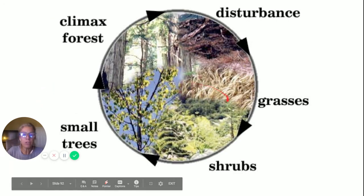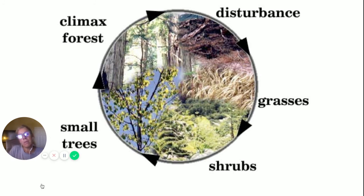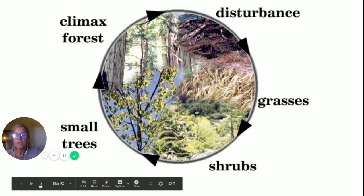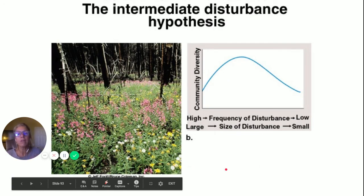Here's another look: grasses and shrubs come in, then small trees, then climax forest; then disturbance and you start all over. Sometimes fires in Yosemite are allowed to burn because it cleans out the underbrush and gives other organisms a chance to reestablish. Some tree seeds won't even germinate unless they've been scarred by fire. A little disturbance is good — having a fire every single year in Yosemite, maybe not so good. This comes from the intermediate disturbance hypothesis.